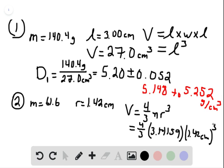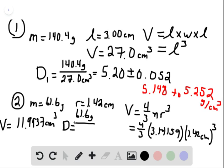I'm running out of room here, so I'll continue over here on the left. So the volume is, to 3 sig figs, 11.9937 centimeters cubed. So then the density is going to be 61.6 grams over 11.9937 centimeters cubed.